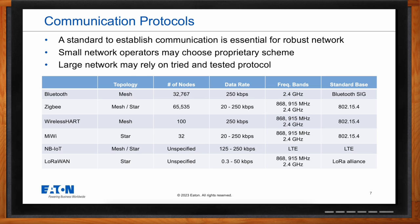Bluetooth and Bluetooth Low Energy are widely recognized in the consumer space; Bluetooth Mesh was introduced in 2017 to support networked devices. Zigbee is a wireless mesh networking protocol used in industrial and smart home applications, known for low power consumption and support for large networks. WirelessHART is used in industrial environments for wireless communication in process automation. MiWi, developed by Microchip Technology, is used in wireless sensor networks for low-power, low-cost, short-range communications.